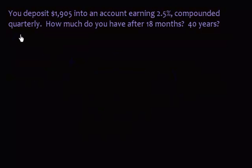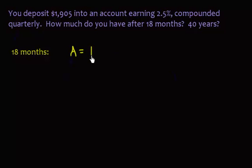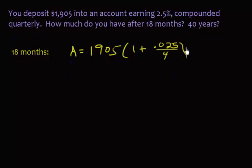Let's try one more example. Suppose you deposit $1,905 into an account earning 2.5% compounded quarterly. How much do you have after 18 months? Using A = P(1 + r/m)^(mt): P = $1,905, r = 0.025, m = 4 (quarterly). For t, we must convert 18 months to years by dividing by 12, giving t = 1.5 years. So the exponent is 4 × 1.5.